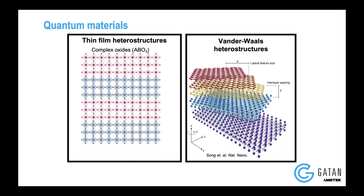On the other hand, van der Waals heterostructures are materials that are naturally layered. What you do is use mechanical force — mechanical exfoliation — to separate out each of these layers. Then you can use your creativity to design your own heterostructure with various material combinations, and they result in different sorts of properties. These days you also have a twist degree of freedom — the famous example is superconductivity in graphene where a one-degree twist resulted in superconductivity.